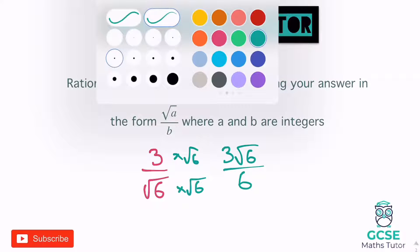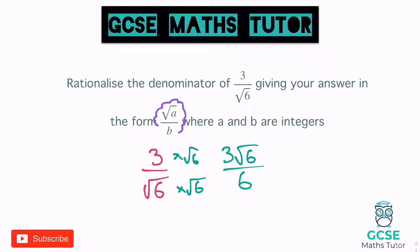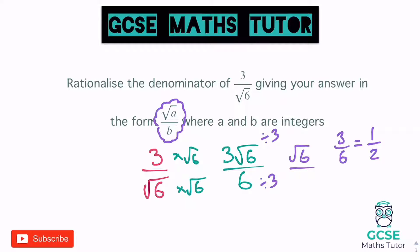This is where the extra part of the question comes in, because it says to write it in the form root a over b. At the moment we've got this three in front of the root six, so this fraction must simplify. Let's think about the fraction three over six — this simplifies, with top and bottom both divided by three, down to one half. We can apply that same logic here: divide the top by three to get root six, and the bottom by three to get two. So root six over two. That's in the form the question asked for — a is six, b is two.